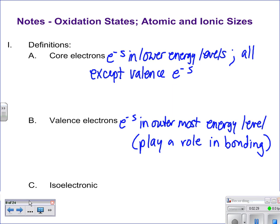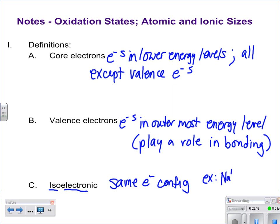If we talk about isoelectronic, remember iso means same electron configuration. For example, sodium with a plus one ion charge and neon — both of those have an electron configuration of 1s2, 2s2, 2p6, so both of those would be considered isoelectronic.